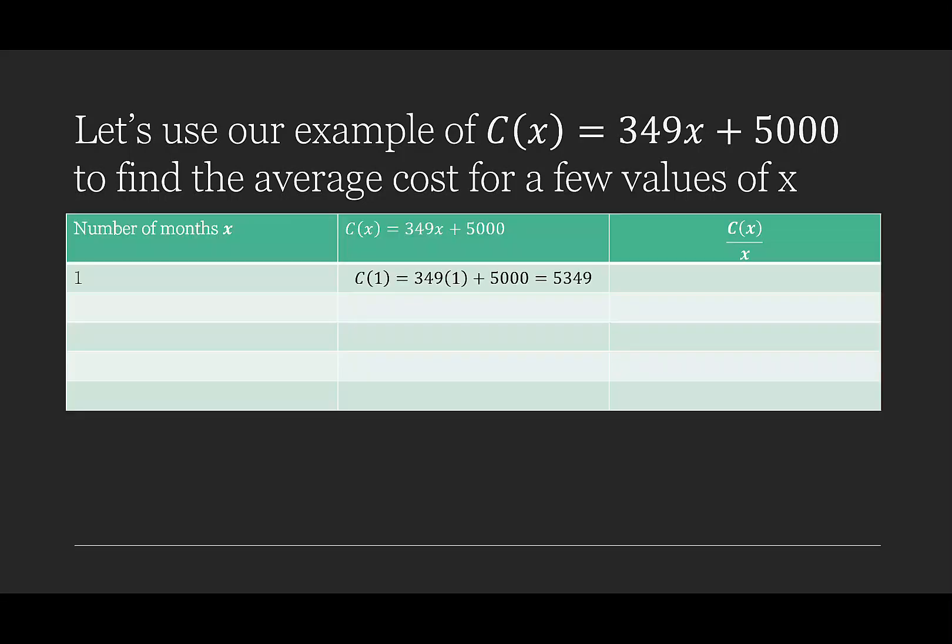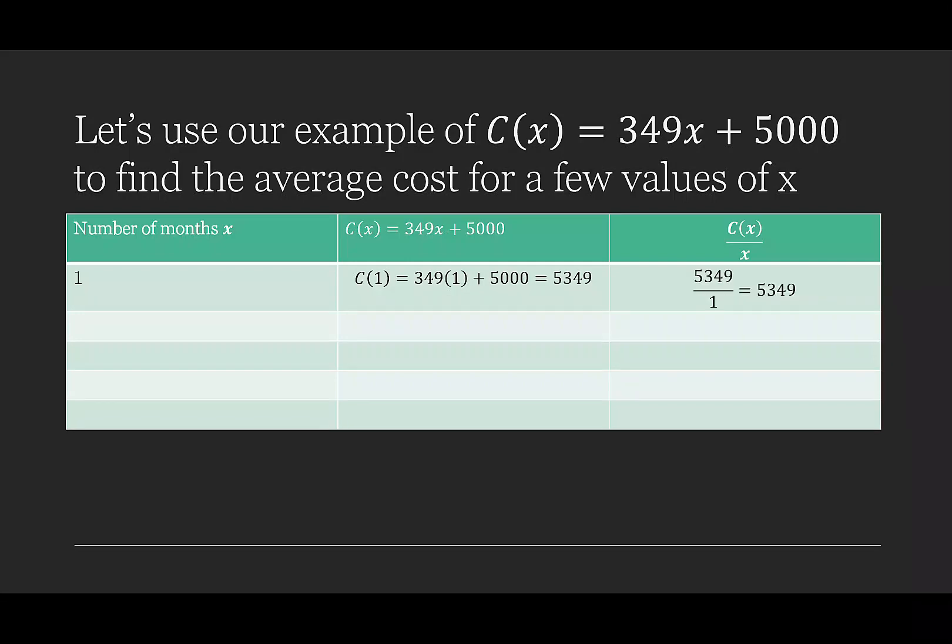After the first month, we've paid a total of 349 times 1 plus 5,000, which is $5,349. When we divide the cost by the number of months, we just get $5,349.